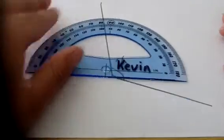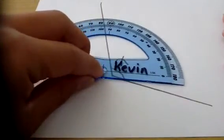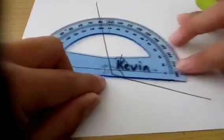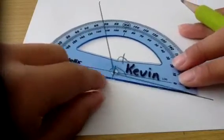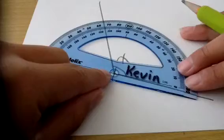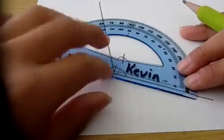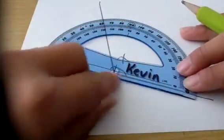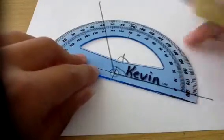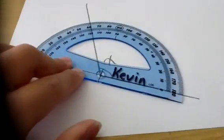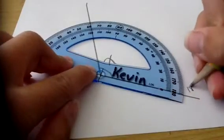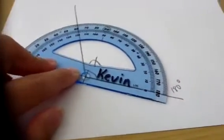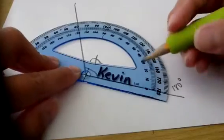To measure an angle, put the perpendicular or the middle onto where they share a line, so it would be right here right now. Then this side will have to be matched up with this line, and that should go up to 180 degrees.